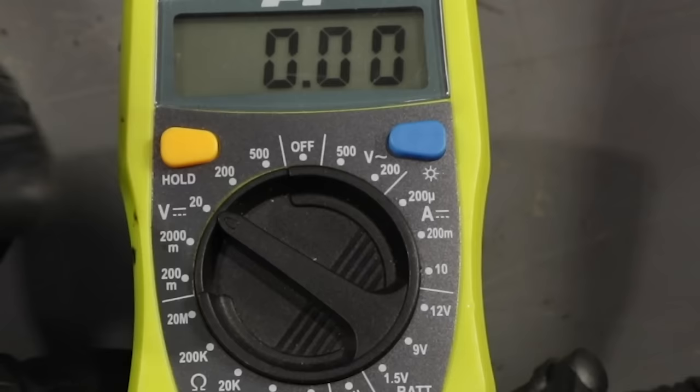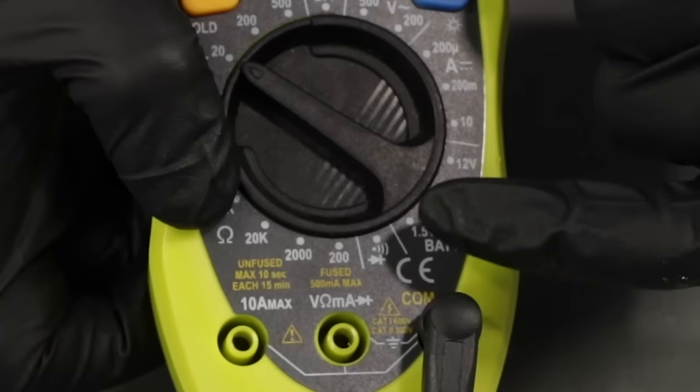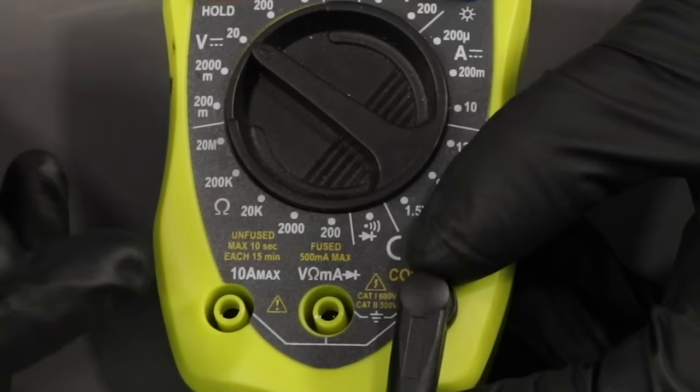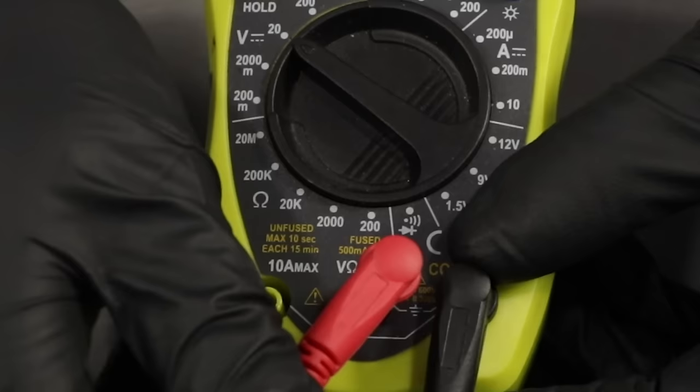You're going to want your black lead in the common right here. Every meter is a little bit different. And then your red lead, you need to check down below where the voltage is going to go. That one's going to go right there. This is how we're going to test for voltage.